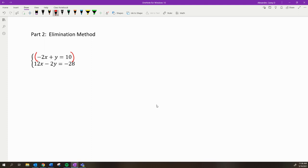what if I multiply this by 6? I'm choosing 6 for a specific reason, but I must multiply all three terms by 6. 6 times -2 is -12x, 6 times y is 6y, and 6 times 10 is 60. By multiplying that equation by 6,